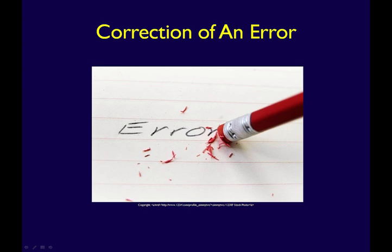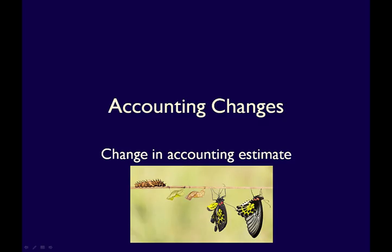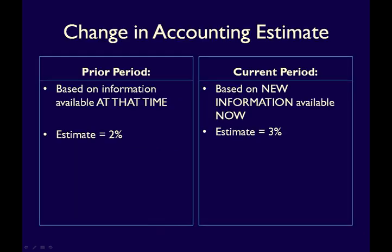Let's look at each of these individually and how they are dealt with. First is a change in accounting estimate, also called a change in estimate. This is where, based on new information, a different estimate is required for the current period compared to the estimate used in a prior period. The new estimate may change the carrying value of an asset or liability, or it might change the way we recognize the use of an asset.